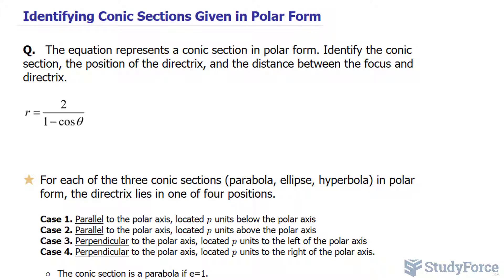And for each of these three types that are in polar form, the directrix lies in one of four positions. What we have to do is analyze this equation so that we can determine all of this information.